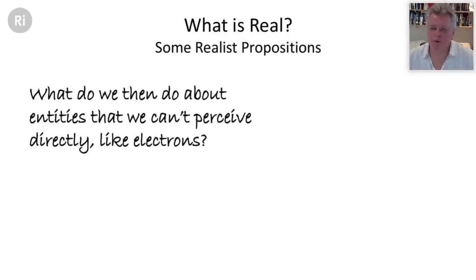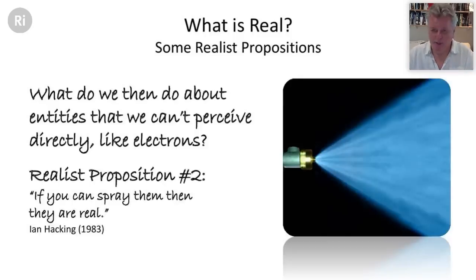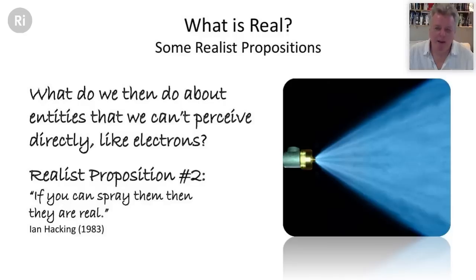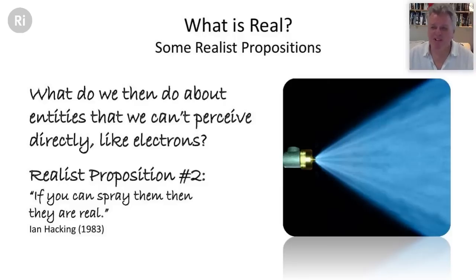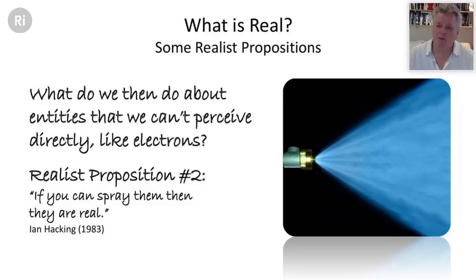Canadian philosopher Ian Hacking in 1983 provided a splendid proposition: 'If you can spray them, then they are real.' Even though we can't perceive electrons directly, if we can manipulate them — push them down a wire, through a circuit, through computer hardware — then we have good reason to believe they really exist. So electrons really do exist with the properties we'd want to ascribe to them as physicists, even though we can't see them. That's proposition two.